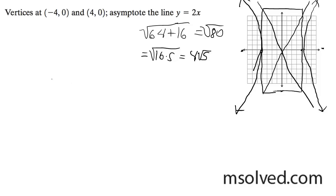And our equation is going to be, opens up with x, so x squared over 16 minus y squared over 64 is equal to 1. That's it.